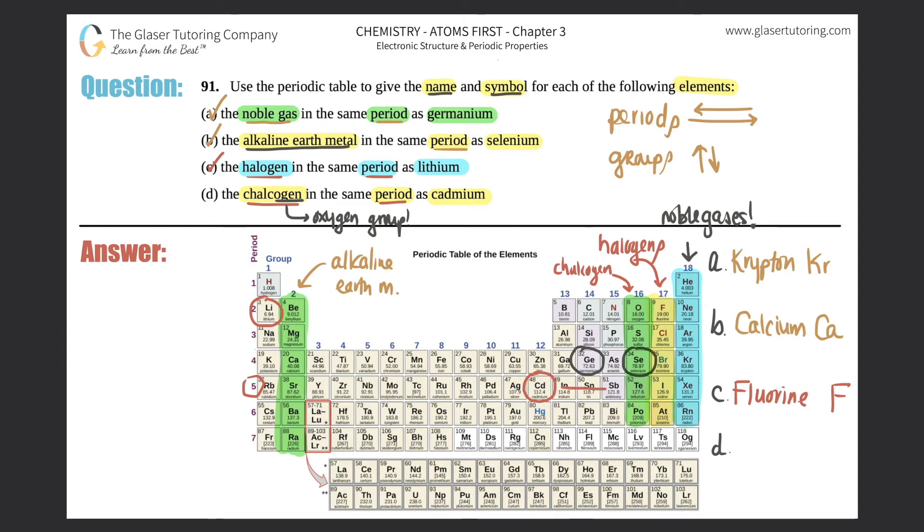Chalcogen. And what element is in the same period as cadmium? Well here's cadmium, right? If I scan over here, it's got to be tellurium. And that's it. So this would be tellurium, T-E-L-L-U-R-I-U-M, and the symbol is Te. And those are your four answers.